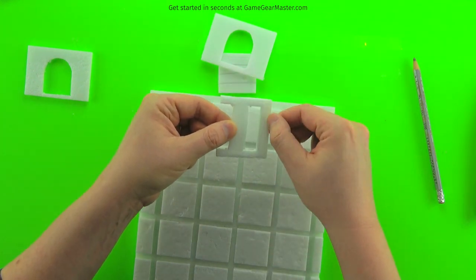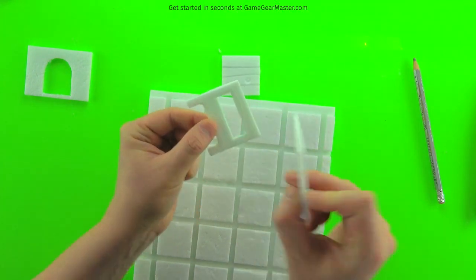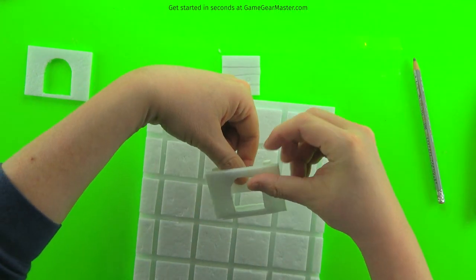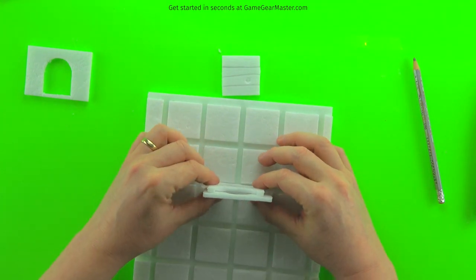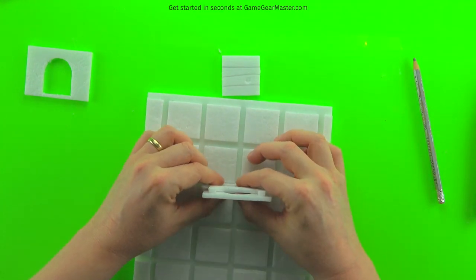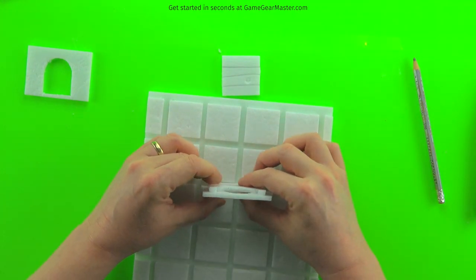So just like with the regular walls, you're going to make sure you don't put any glue on the bottom part of the interior piece, because that's going to be in the gutter between the grid squares. And then again, you're going to center up that interior piece left to right. That looks pretty good.